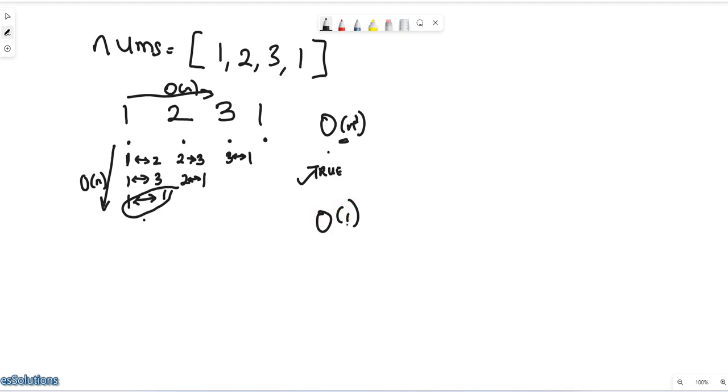But for the space complexity, the space for this is O of 1 because you don't really need to store anything anywhere. You just return true or false. So this is one approach but the time complexity is actually too high, it's not optimal.